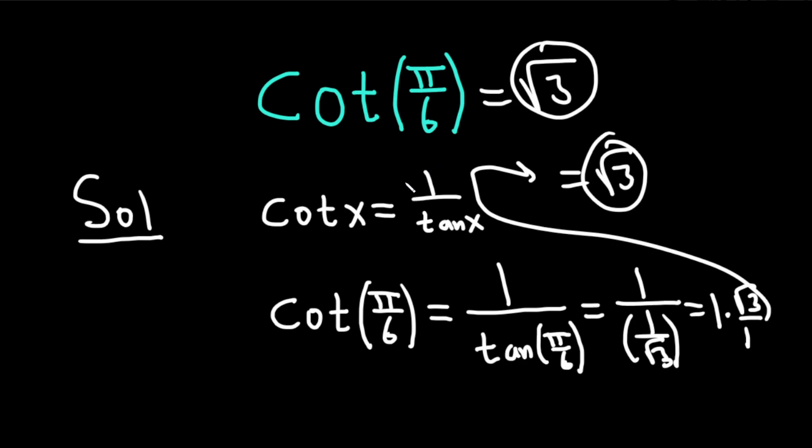Another way to do it is you can write cotangent of x as cosine x over sine x, and compute the sine of pi over 6 and the cosine of pi over 6. And yet another way is to use triangles, but that takes a little bit more work.